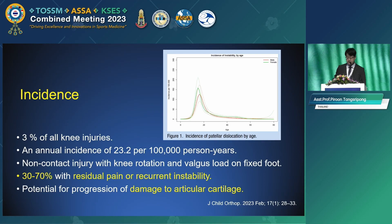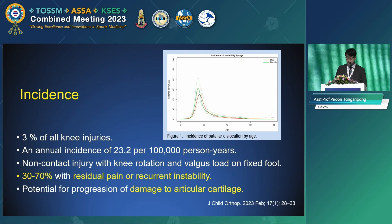Regarding incidence, acute traumatic patella dislocation is the second most common cause of traumatic knee hemarthrosis and accounts for approximately 3% of all knee injuries, with an annual incidence of 23.2 per 10,000 person-years. It typically results from a sports injury and occurs in young active patients under the age of 20.